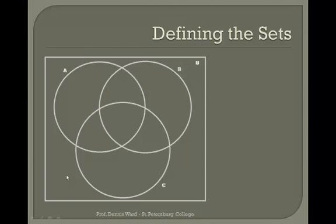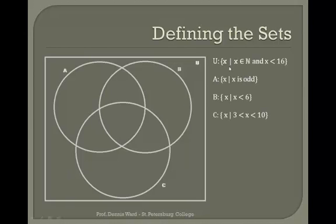Let's start with defining some sets so that we can use them to talk about the different operations. We're going to begin with these definitions using set builder notation. Our universe is all items X such that X is an element of the natural numbers — our counting numbers one through five — and X is less than 16.